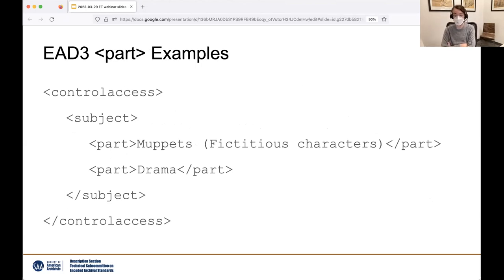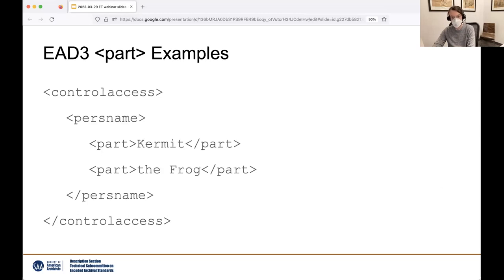Here's an example of a subdivided subject. You can see how what was a single subject string in EAD 2002 of 'Muppets—Drama' is now two parts: one for the top subject of 'Muppets' and one for its subdivision 'drama.' Note that the em dash that was in the subject heading previously is now gone. Formatting elements are left out of EAD part strings since they're no longer needed — the part itself is what provides the subdivision. And here's an example of a name split into parts: the primary part 'Kermit' and his title 'the Frog.' The comma formatting is gone, as it's no longer needed to separate Kermit from the title.